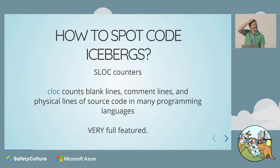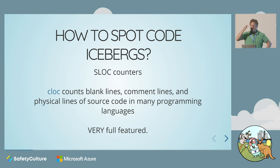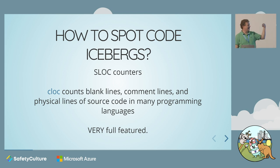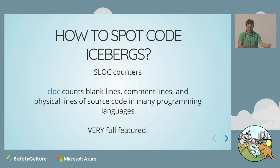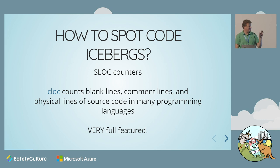So how do you actually spot these things? It's a tricky one. There are a bunch of tools out there called slot counters. Probably the most famous and original one is a thing called cloc — it stands for count lines of code. It counts blank lines, comment lines, tells you what language is in it. You point it at a directory and it will tell you it's, say, 50,000 lines of Java, 10,000 lines of C. It gives you an idea of what you're dealing with. It's very full-featured.